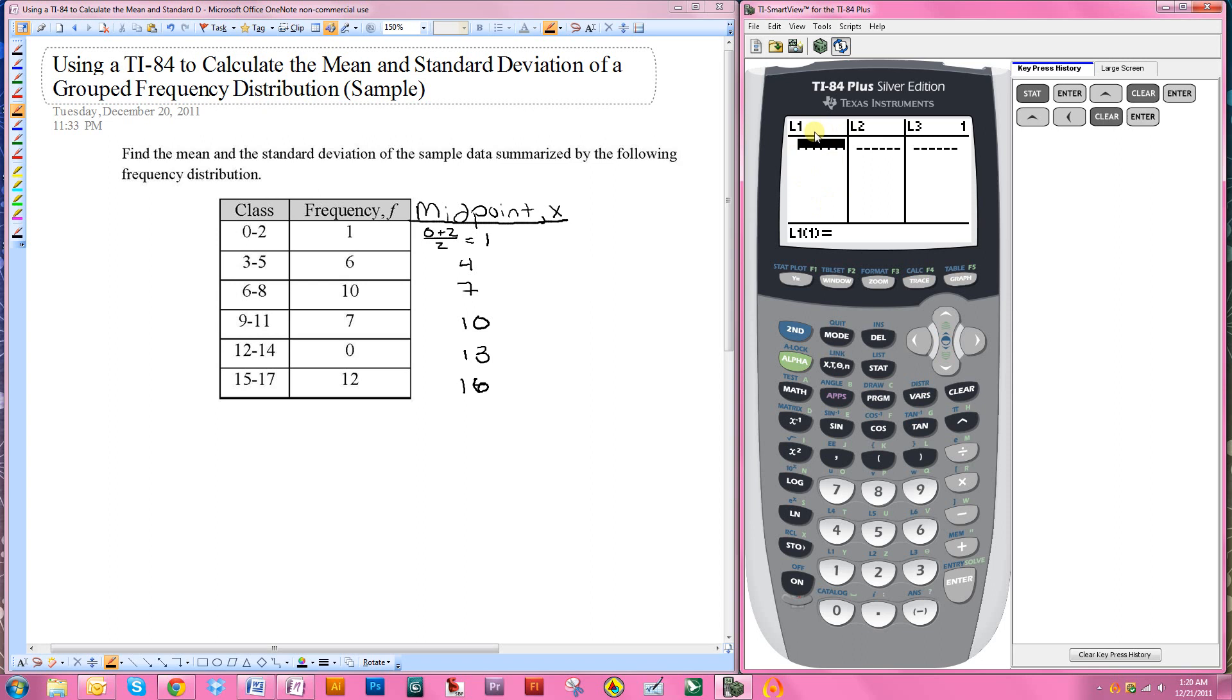So what I'm going to do is in the first column I am going to write each of the data values, which in this case are our midpoints. So I just do 1, 4, 7, 10, 13, and 16.